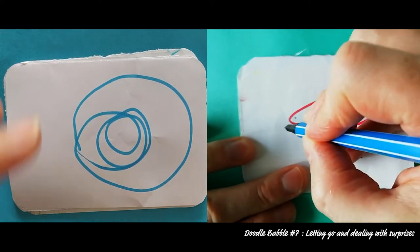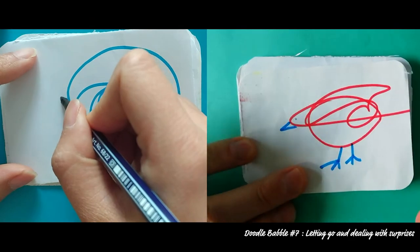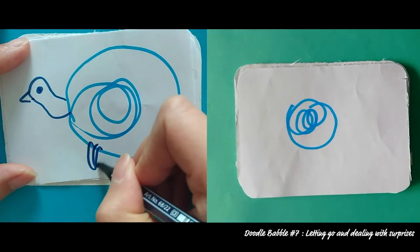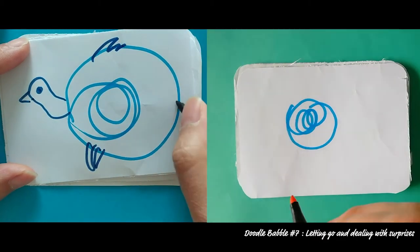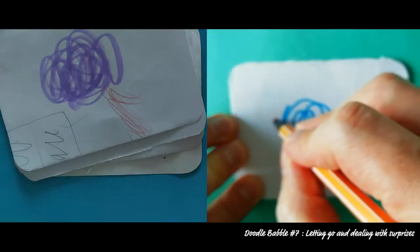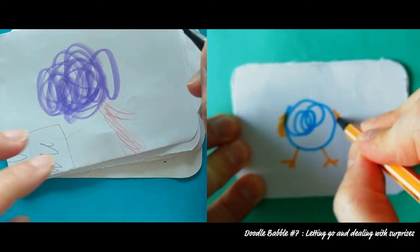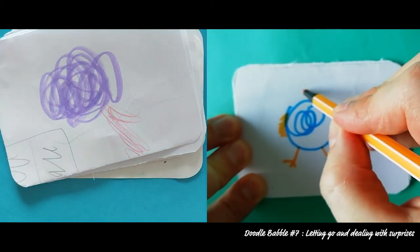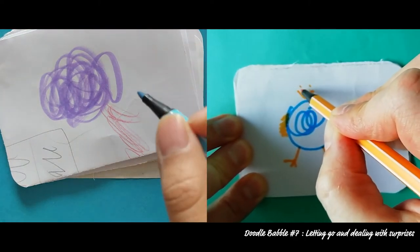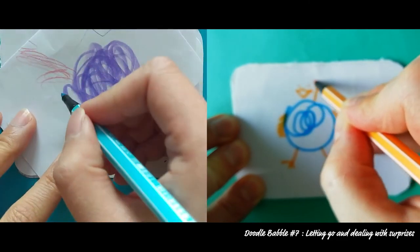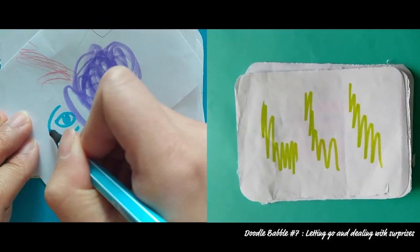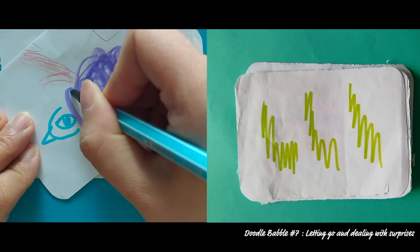It's all about letting go and kind of dealing with the expected and unexpected. So the unexpected here is whatever these blobs we did. I don't even know. Well, I think I did this one, but it doesn't really matter who did it. So these are kind of the conditions that were given. And then let's try to reach an objective about it, which is to make a bird.